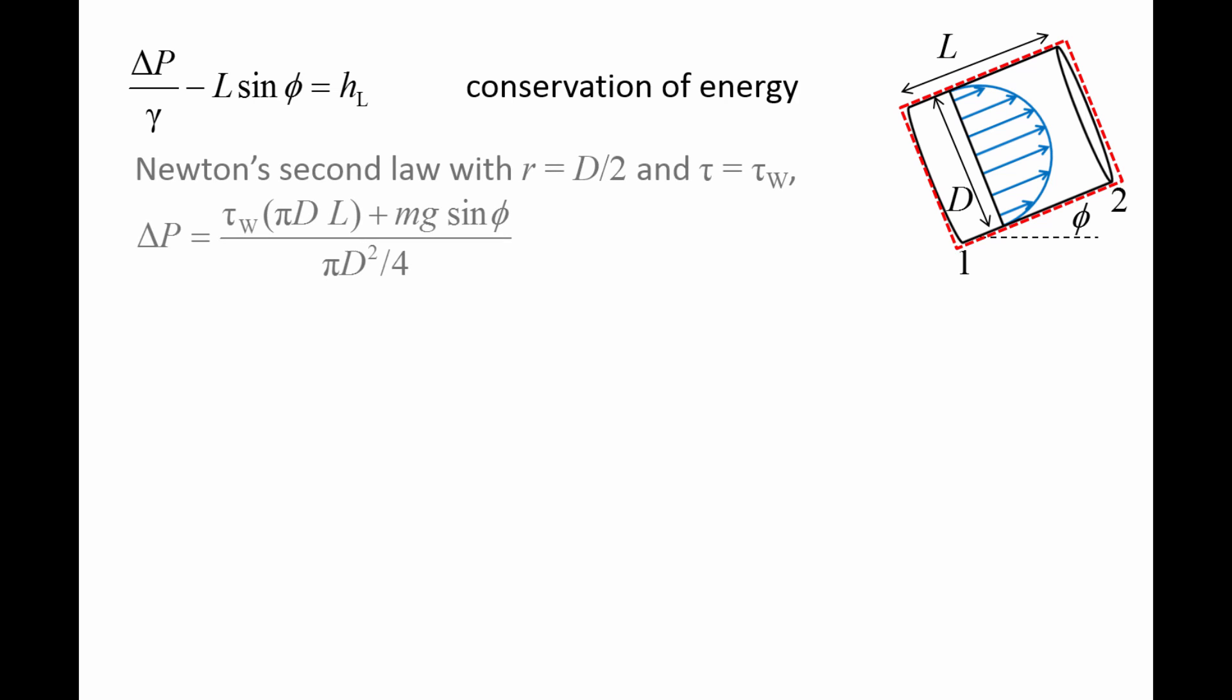Earlier we found an expression for Newton's second law for a fluid cylinder in a pipe. Now we will apply this equation for a fluid cylinder consisting of all the fluid in the pipe, which is the same system we considered when applying the conservation of energy equation. The radius, lowercase r, is half the diameter and the shear stress tau is the shear stress at the wall, which will be denoted as tau w. Newton's second law becomes delta p equals tau w pi dL plus mg sin phi divided by pi d squared over 4.